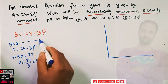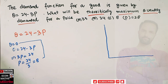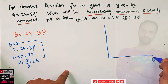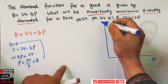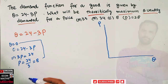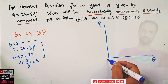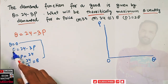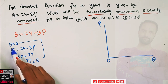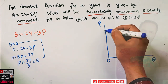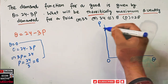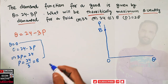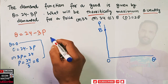That gives p = 24/3, which comes out to be 8. So when quantity is equal to 0, price is 8. We have quantity demanded on one axis and price on the other. When quantity is 0, price is 8 — let's mark this as a point denoting 8.